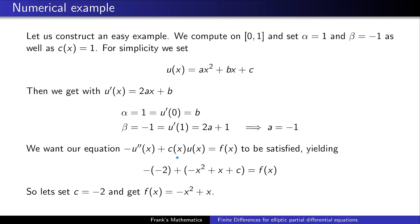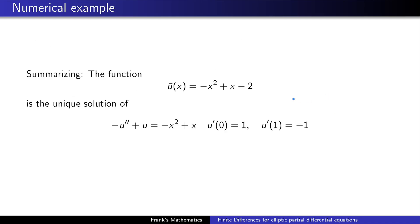So a turns out to be minus 1 and b turns out to be 1. We are left with the value c and with the value for f. So to get a value for f, we just set f to be, well, we have to satisfy this equation. Just plug everything in and we see that f has to satisfy this equation here. We set c to be minus 2 to cancel out with this term here. And we get f to be this nice function here. So it's just a straightforward calculation of an example. Summarizing, the function -x² + x - 2 is the unique solution of this very nice Neumann boundary problem.